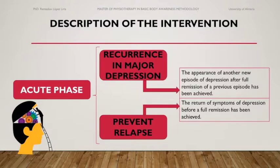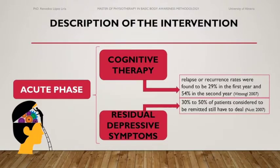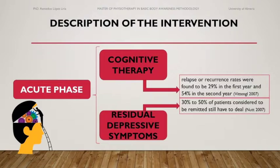For example, after a scheduled termination of acute phase cognitive therapy, relapse or recurrence rates were found to be 29% in the first year and 54% in the second year. In this same study, even when other depression-specific psychological therapies and even higher doses of pharmacotherapy were used after the acute phase treatment, relapse and recurrence rates were still high. One study has shown that 30% to 50% of patients considered to be remitted still have to deal with residual depressive symptoms.